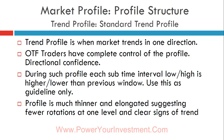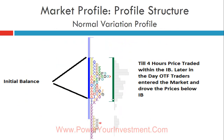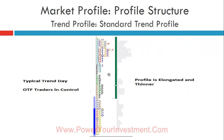A trend profile is elongated — not wide. Looking at the width of this profile, there are a maximum of about three TPO columns, whereas on a normal or normal variation day there can be seven in one line. So profiles on a trend day are relatively very thin and elongated.